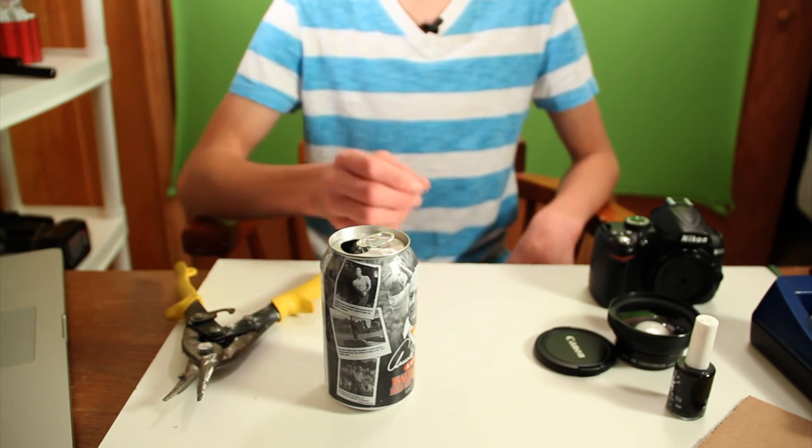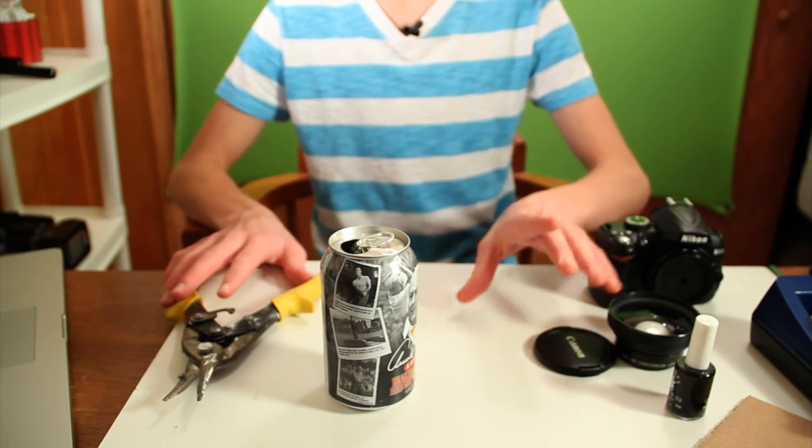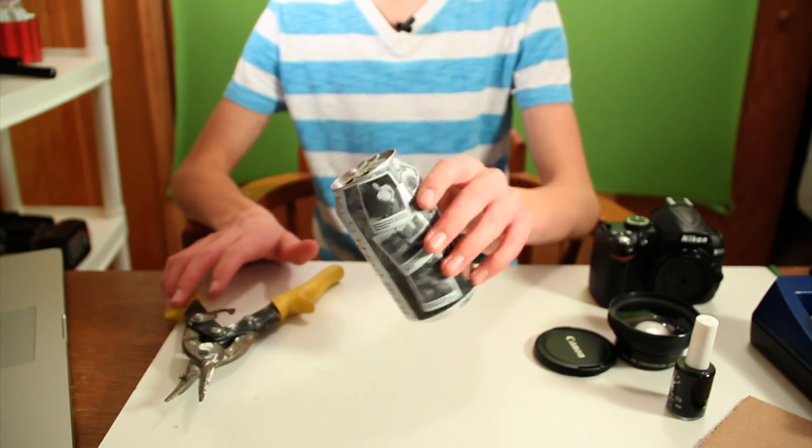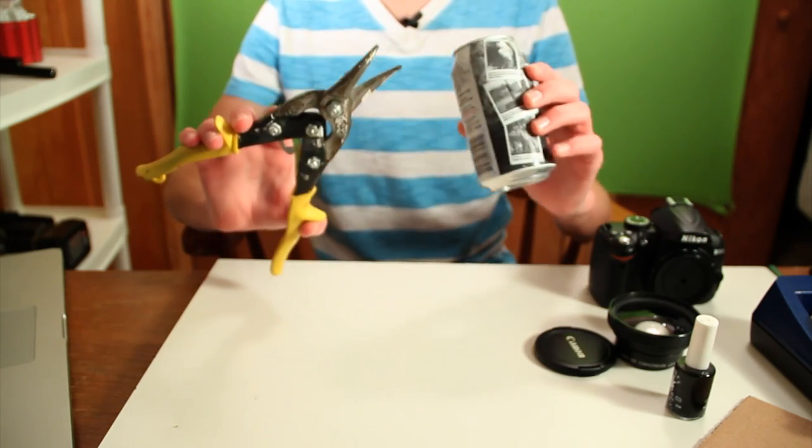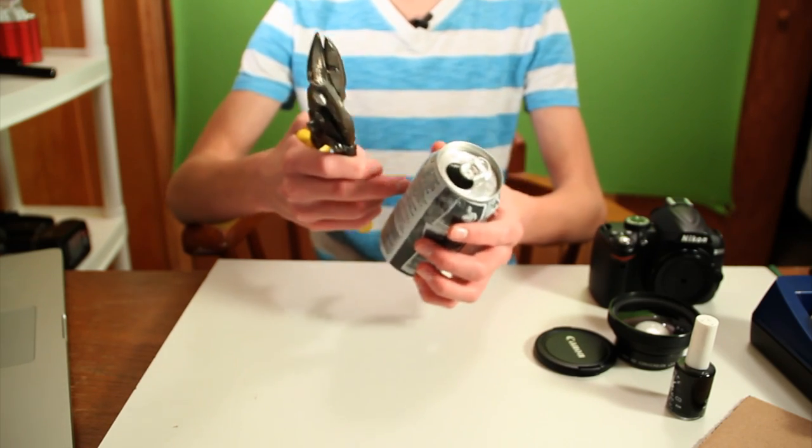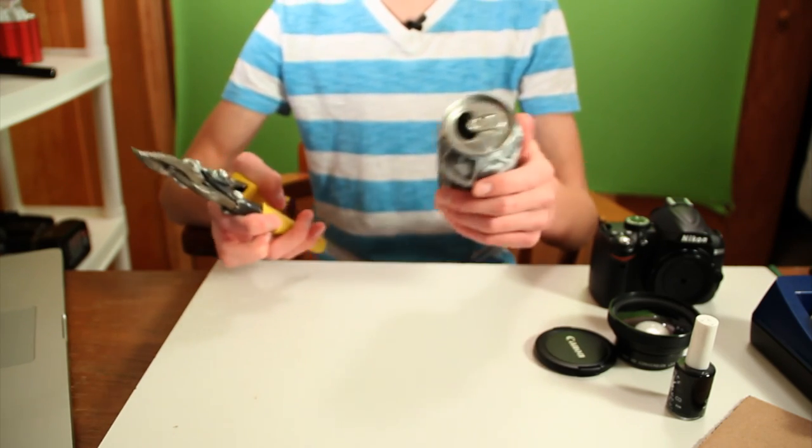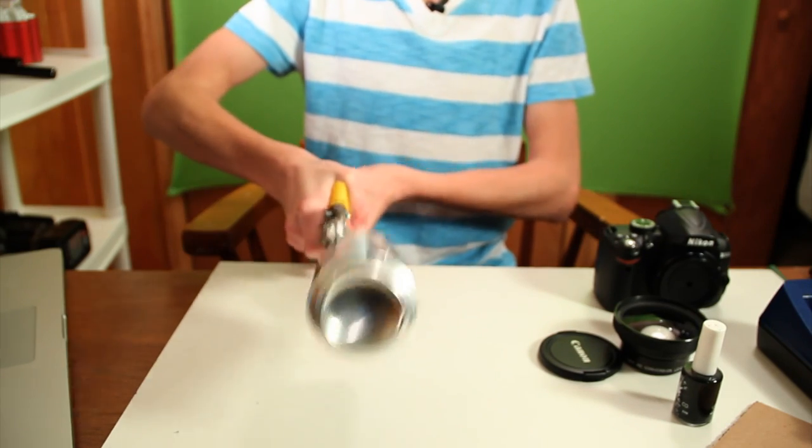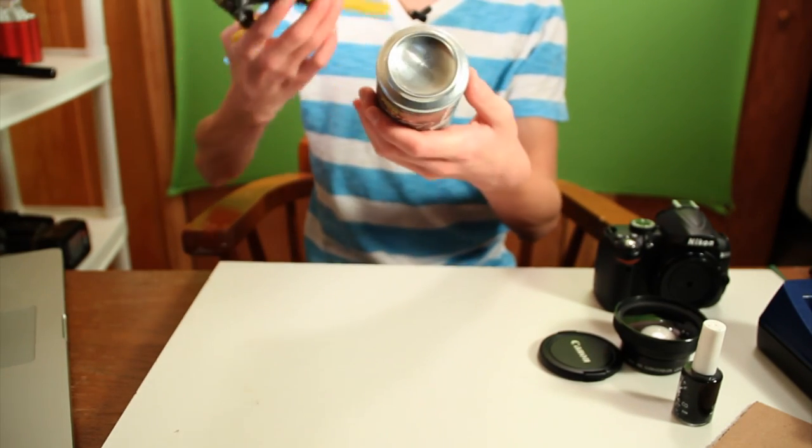Okay, the first step in this project is to take everything and just move it over to this side, except for your can of pop and your metal cutters. Now you're going to want to cut a square of pop can roughly about the size of a postage stamp. This is going to be very entertaining to watch.